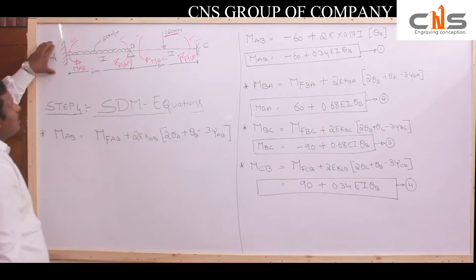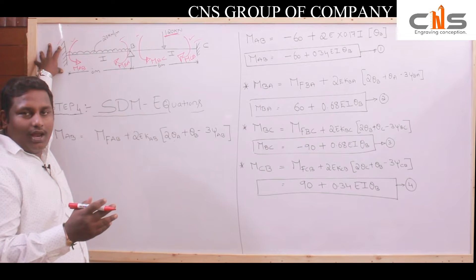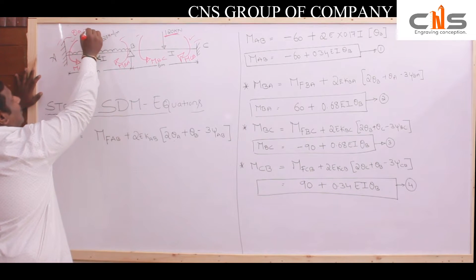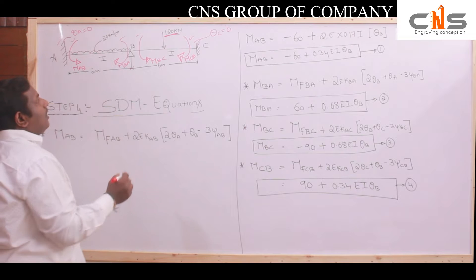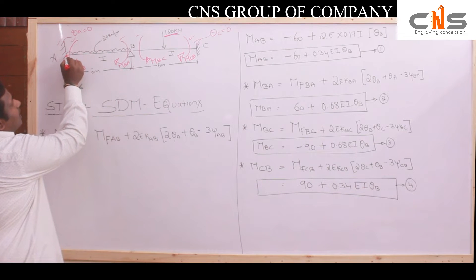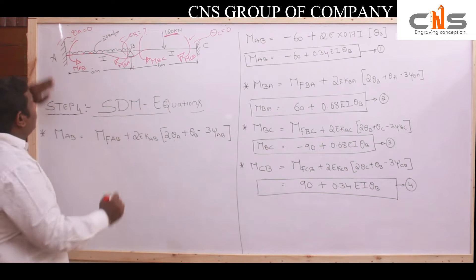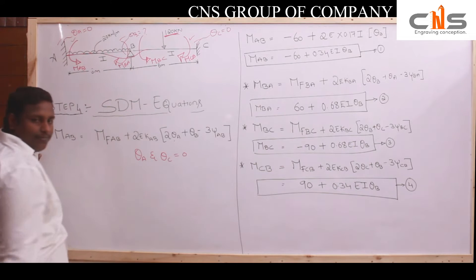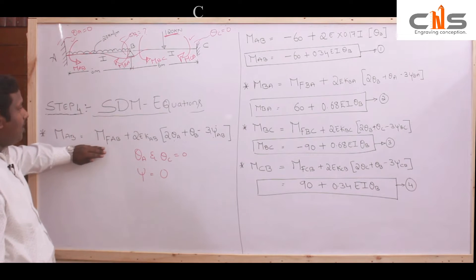In step 4 we apply the SDM equations. For the rotations: since A and C are fixed ends, theta A equals zero and theta C equals zero. The intermediate support B is a hinge, so theta B is unknown. Also, no settlement is given in the problem, so settlement equals zero. These values simplify the slope deflection equations.